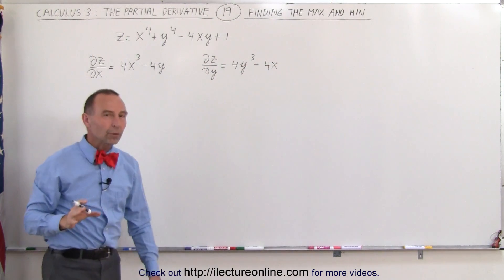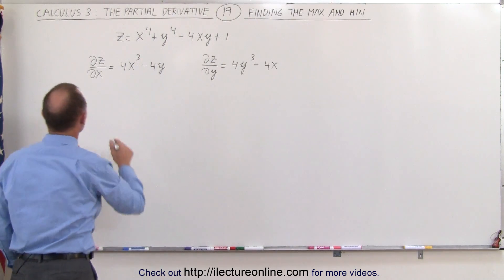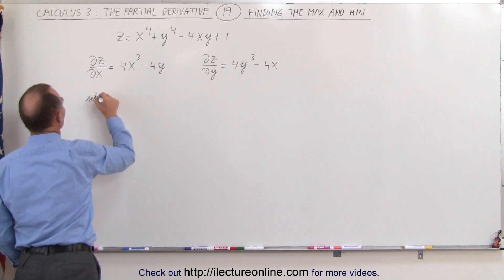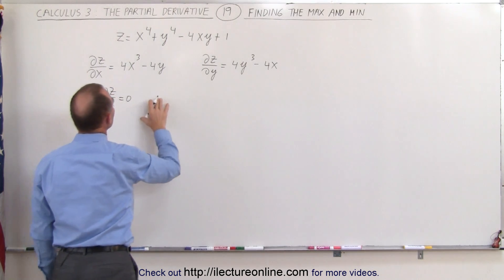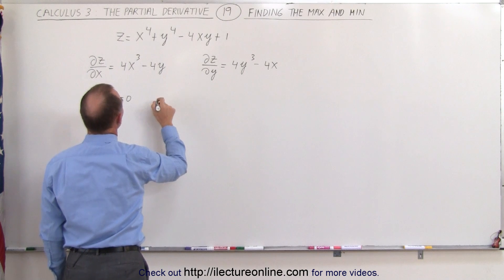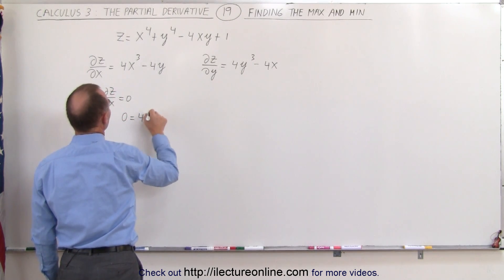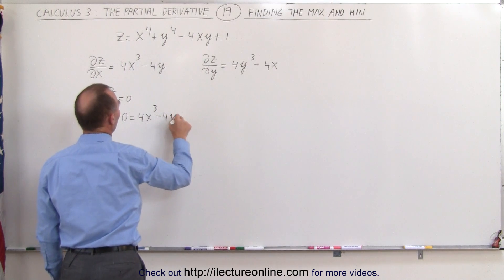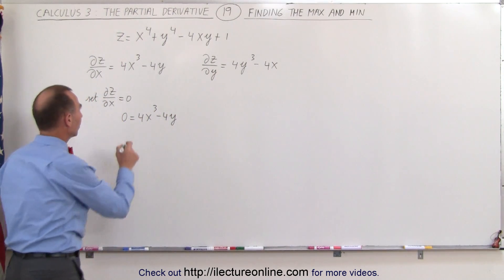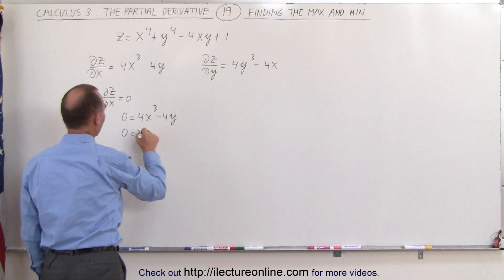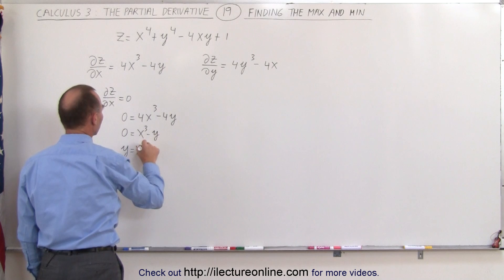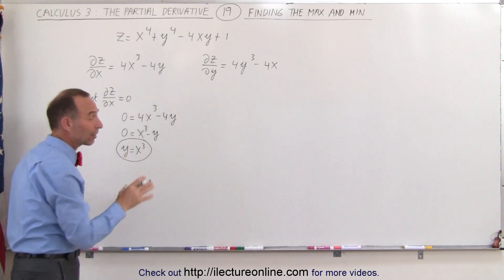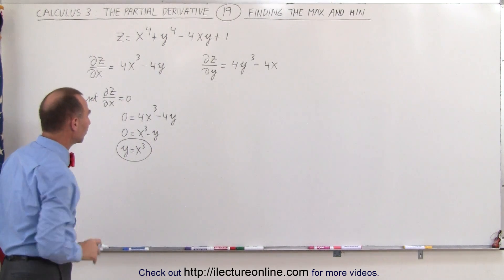Now we're going to set both of these equal to 0 and see what we get. Setting the partial of z with respect to x equal to 0 gives us 0 equals 4x cubed minus 4y. Dividing both sides by 4, we get 0 equals x cubed minus y, or y equals x cubed. So we have a condition where the function is a maximum or minimum when y equals x cubed.